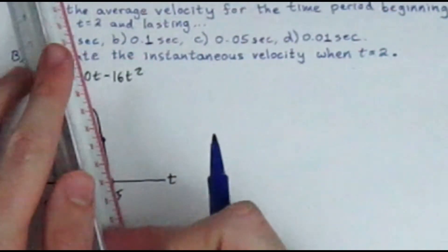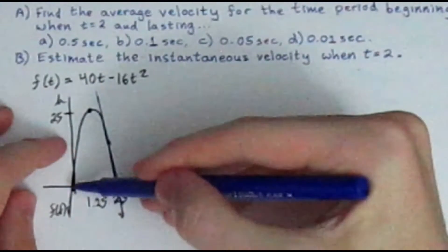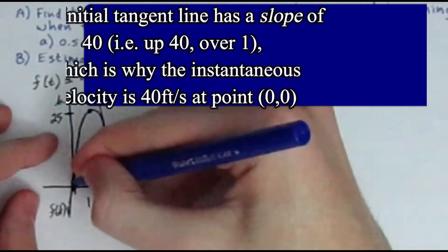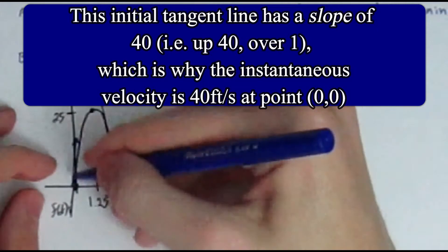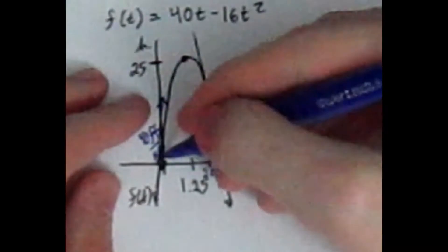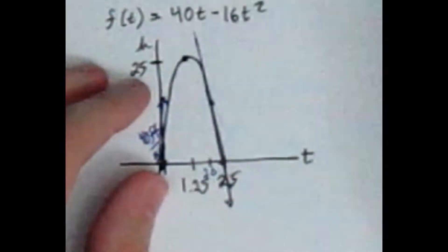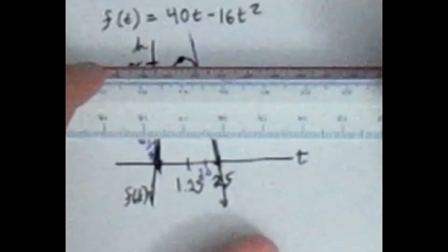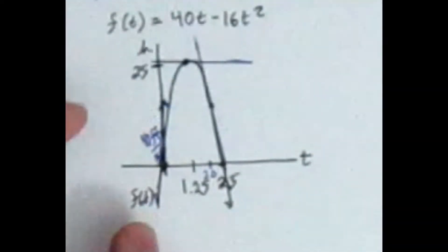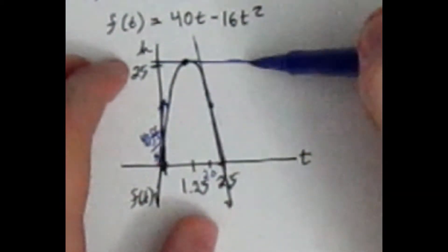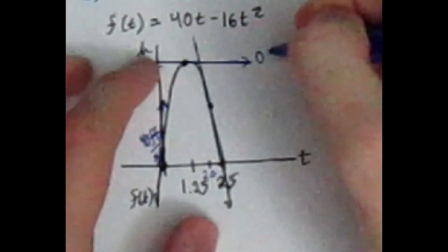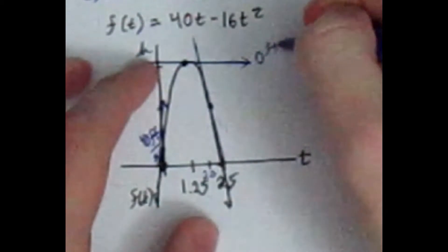We're really finding the tangent line. As the ball is thrown upward, it is not a constant speed. Initially it is 40 feet per second — the instantaneous velocity at the start is 40 feet per second. As the ball goes higher, its speed decreases until it reaches the vertex at t equals 1.25, where the slope is 0, meaning the instantaneous velocity is 0 feet per second.